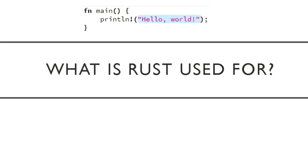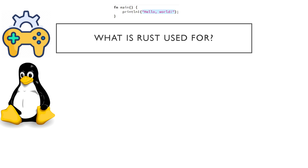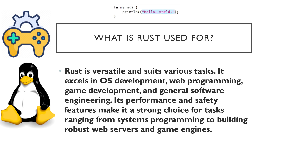Above you can see how to write hello world in Rust — it's very small, not bloated like something like Java. It lets you write code with better performance and better safety. So, what is Rust used for? Rust is versatile and suits various tasks across multiple fields.